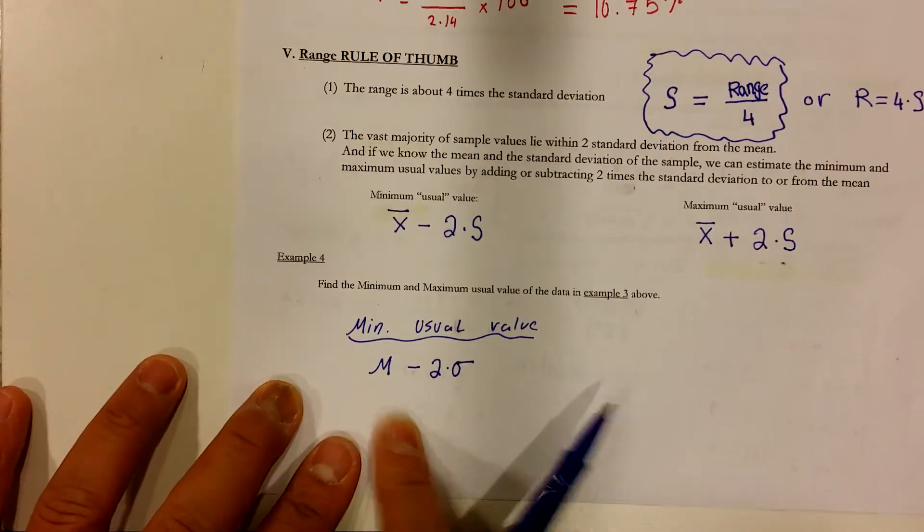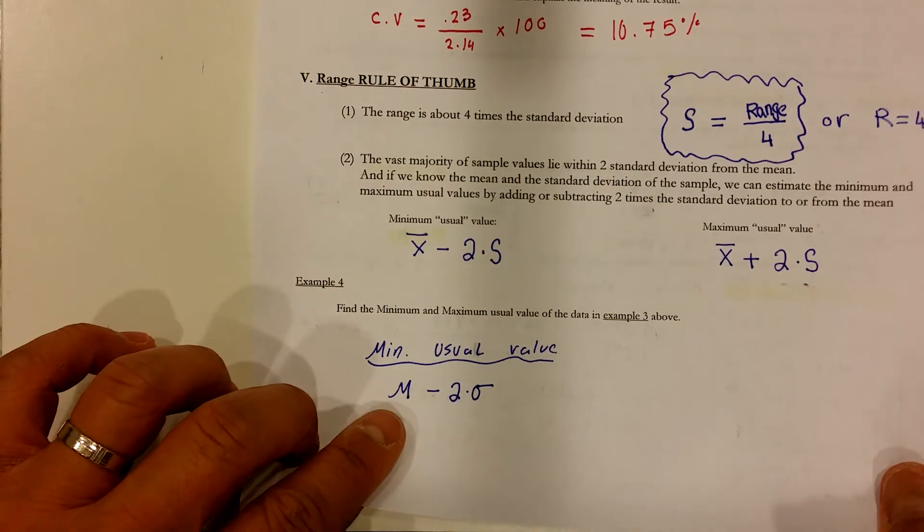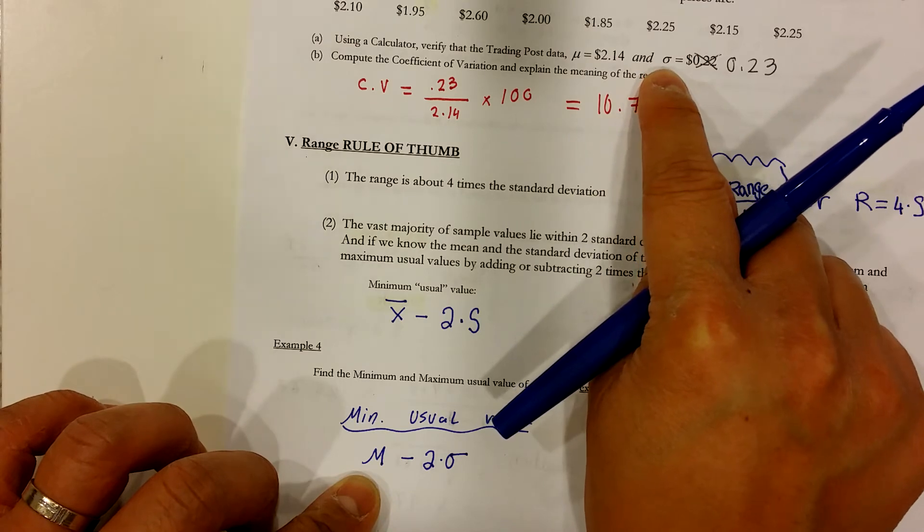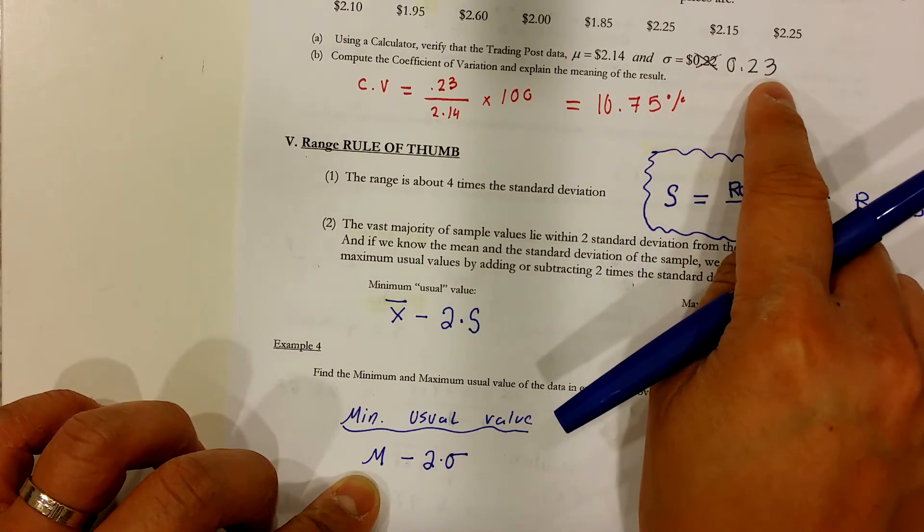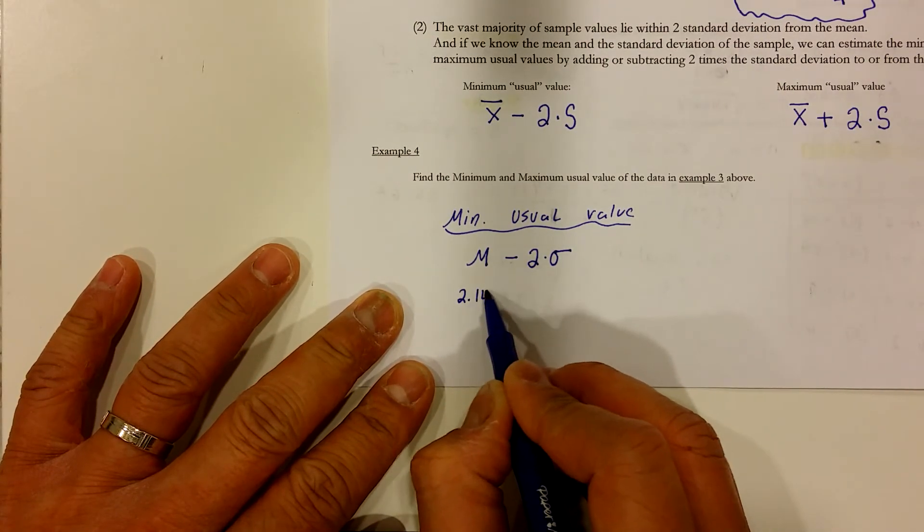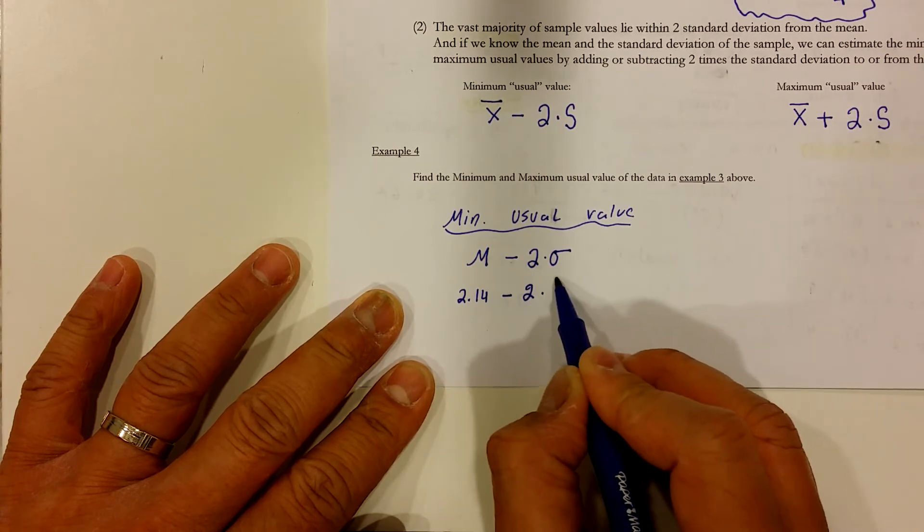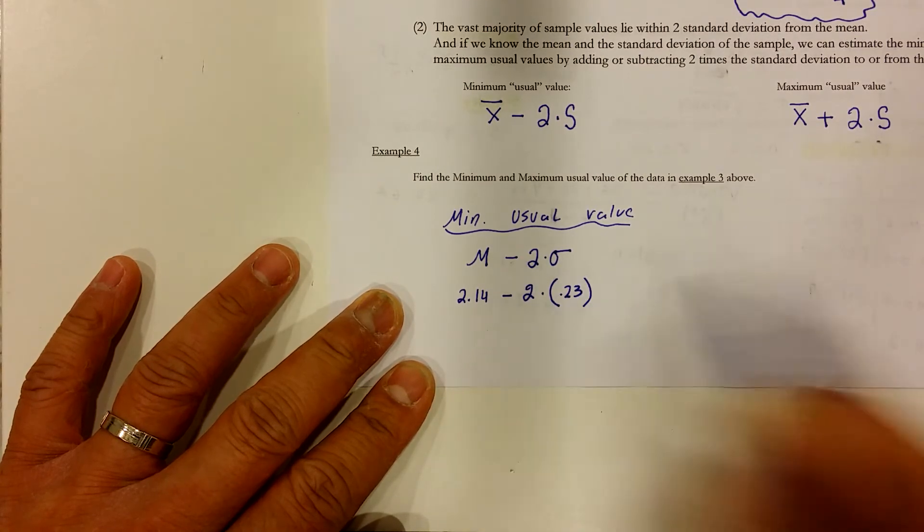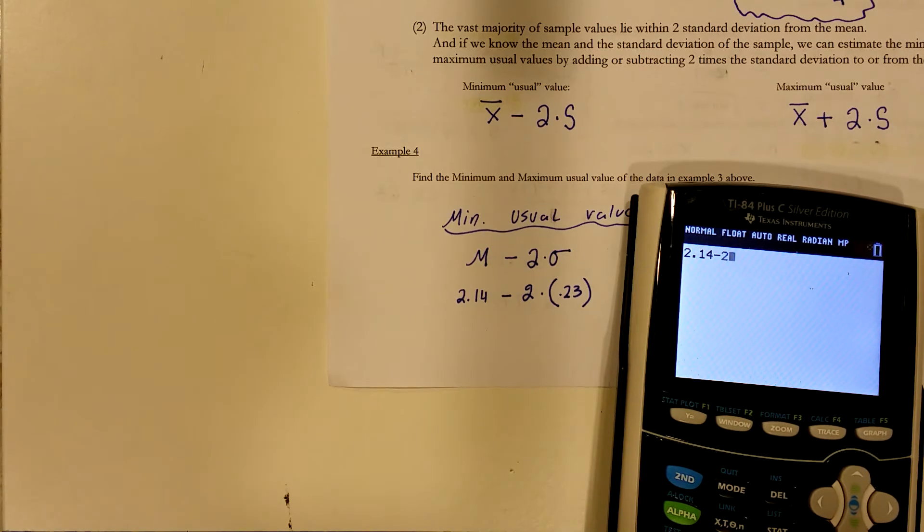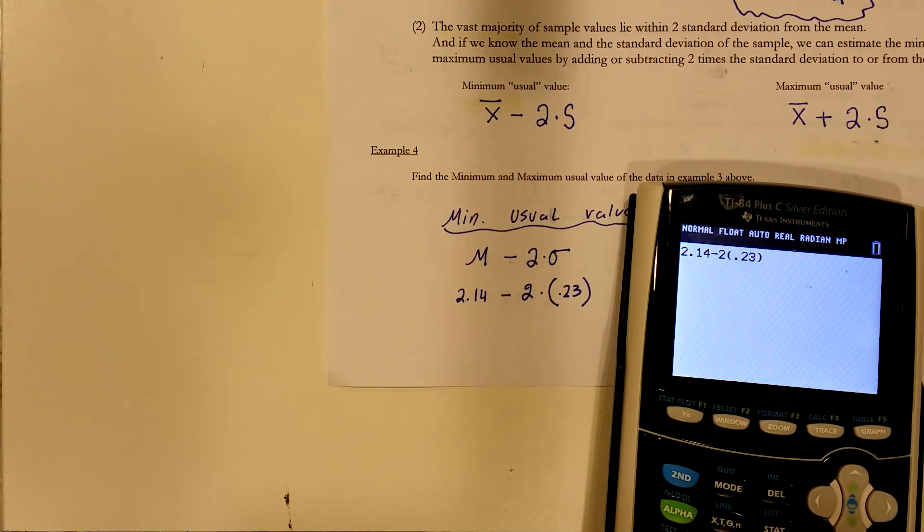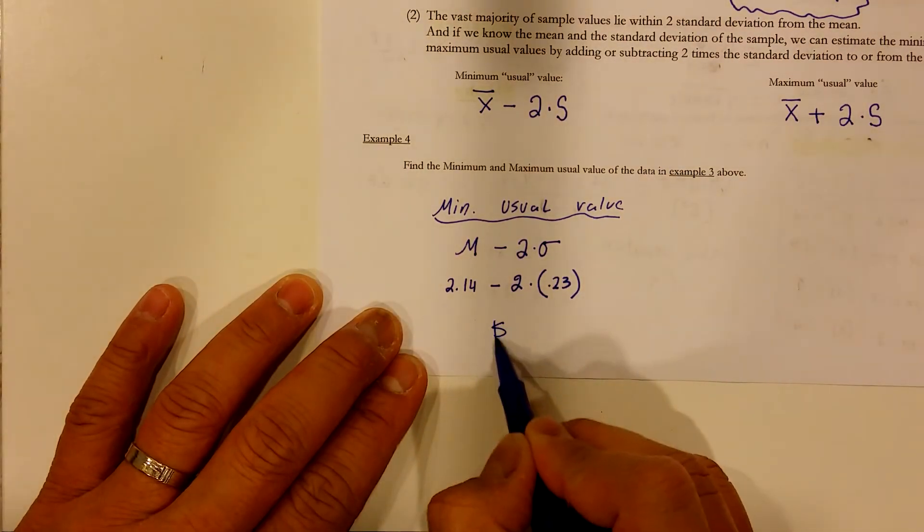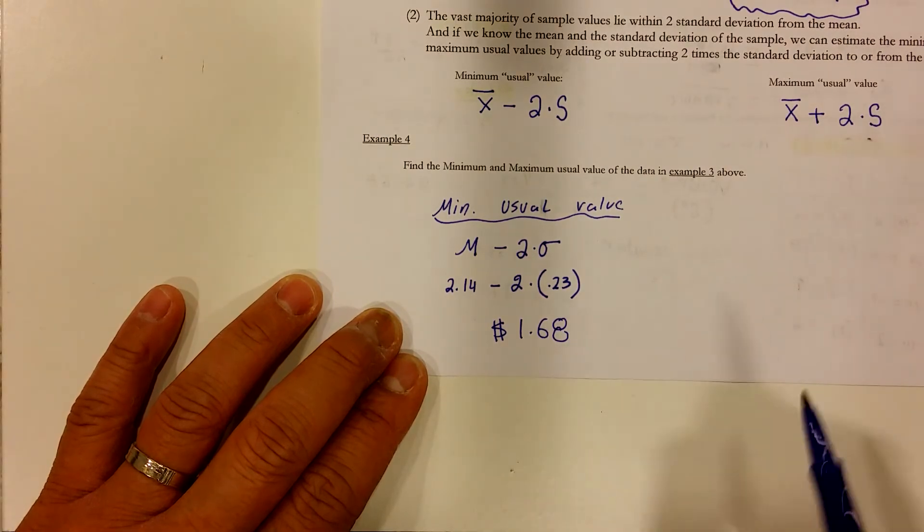All you have to do is replace these letters with the appropriate value. The population mean is $2.14. The standard deviation for your population is 0.23. So, I'm going to go $2.14 minus 2 times 0.23 and then I'm just going to calculate that and see what we come up with. $2.14 minus 2 times 0.23 and I came up with $1.68. So, this is $1.68. That's the minimum usual value.